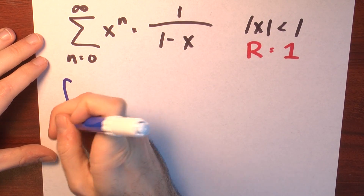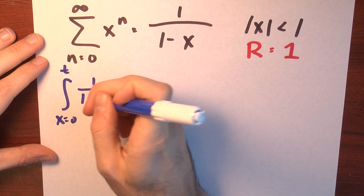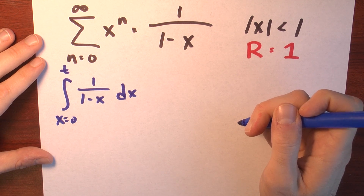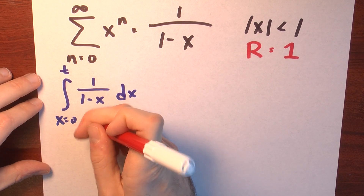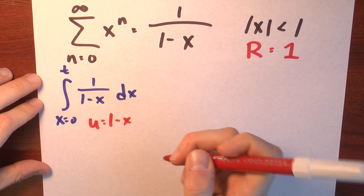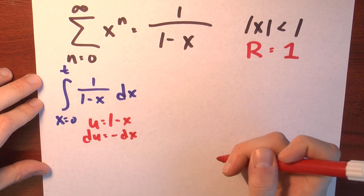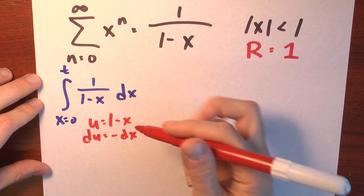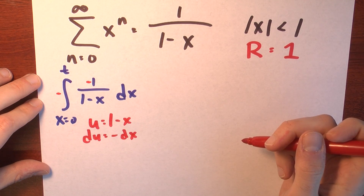Let's integrate that. So we have the integral from x equals 0 to t of 1 over 1 minus x dx. I can evaluate that by making a u-substitution. Let's set u equal to 1 minus x, and in that case du is just minus dx. I don't see a minus dx there, but I can artificially create a minus dx with some carefully placed minus signs.